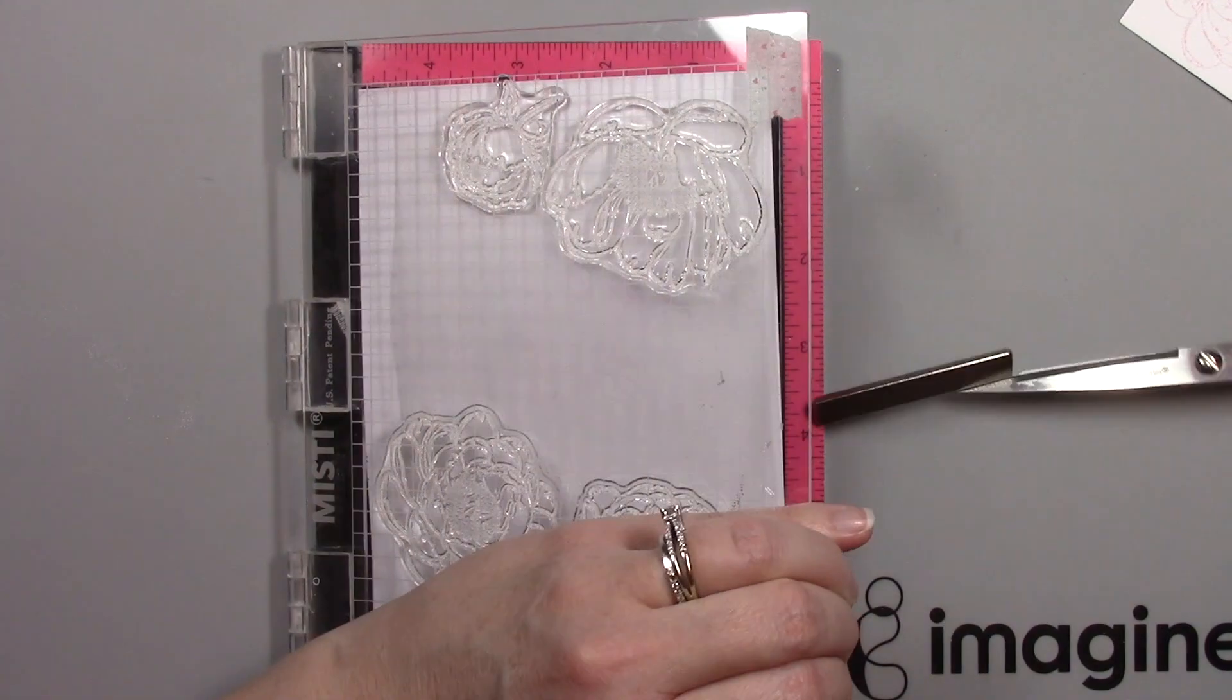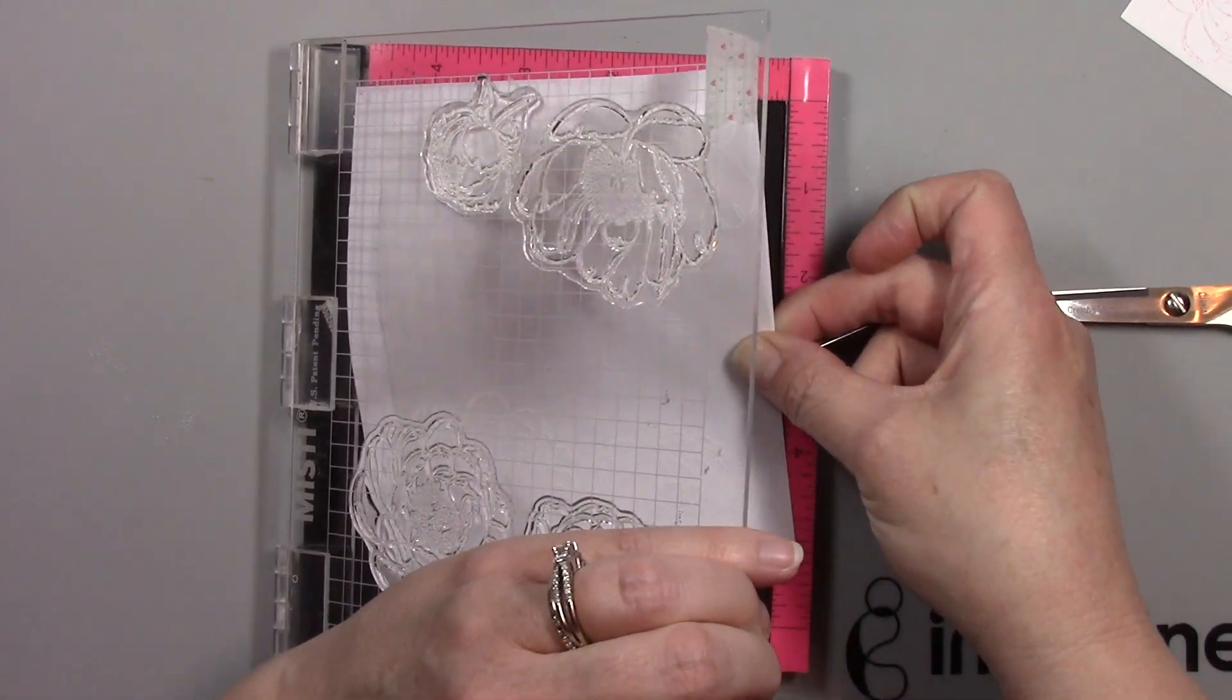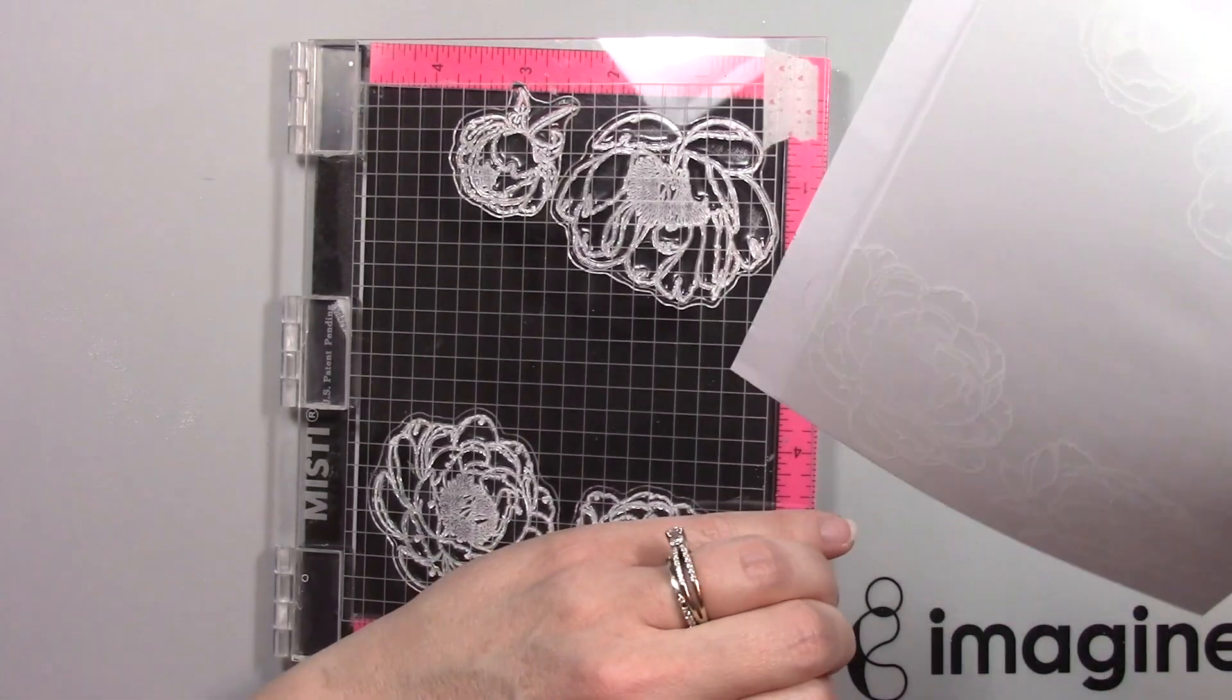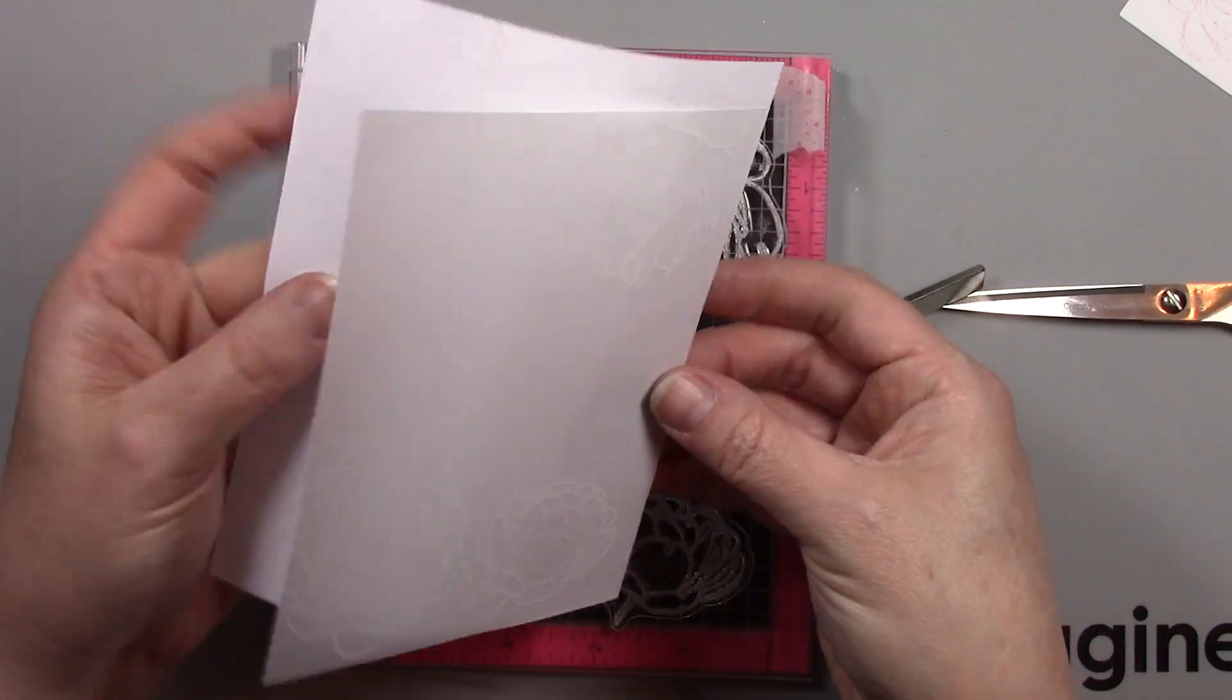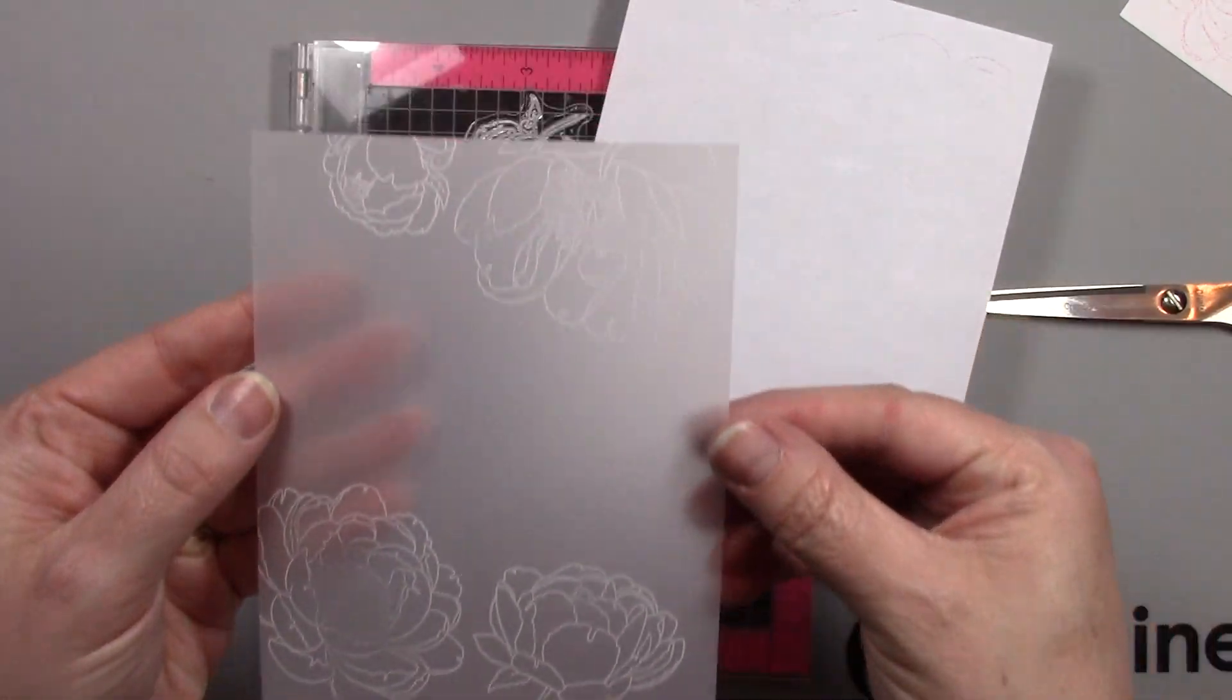I'm putting a lot of pressure on these flowers since I have so many in there and then you can see it is very sticky. I pull off the vellum and you can see that beautiful impression that I get.